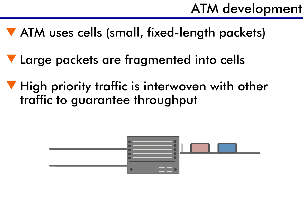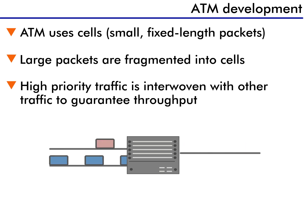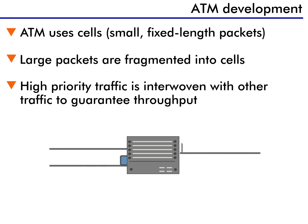Using fixed-length packets avoids the previous situation in which the packets are processed on a first-come, first-served basis. Let's just see how ATM does this.